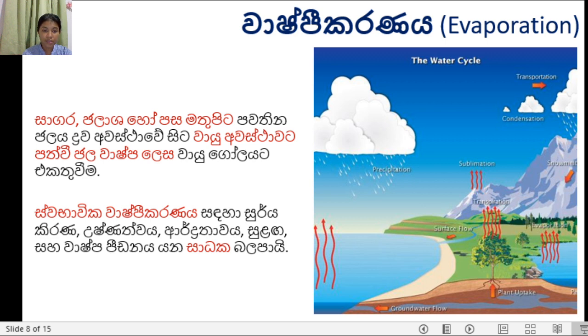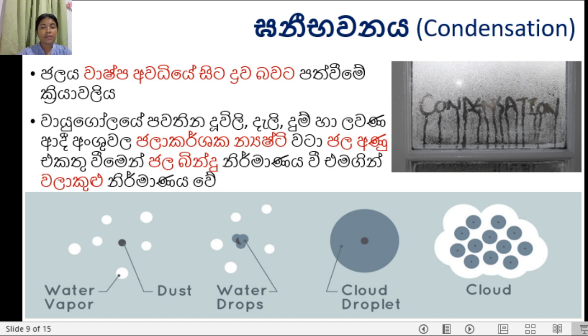Sura kiraan, Ushnaattwa, Aardhitaavya, Sulaanke — waash pikaanenek kiyaanen sathak. Vala pahanawa gani bhaavani — Condensation.